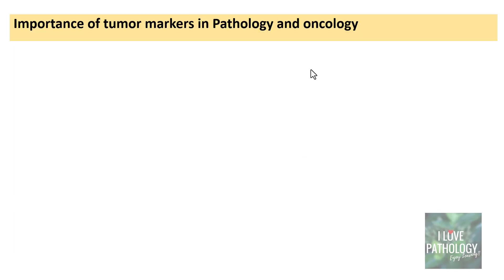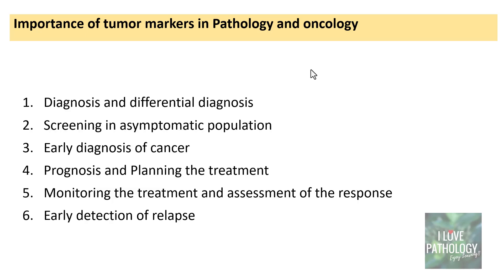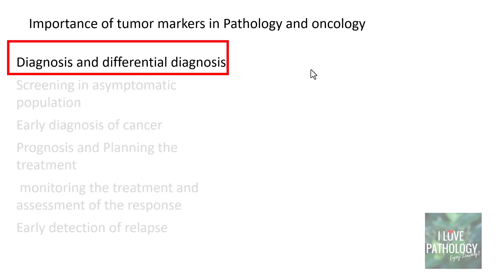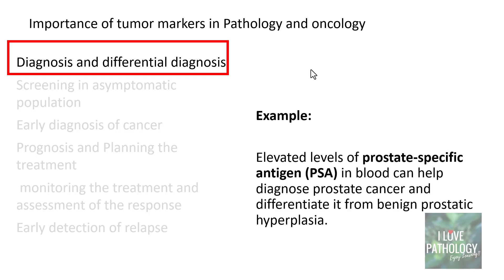Now, why do we need to know tumor markers? What is the importance of tumor markers in pathology and oncology? There are various uses. First is diagnosis and differential diagnosis. For example, elevated levels of prostate-specific antigen help in diagnosing prostate cancer, and significant elevations can differentiate it from benign prostatic hyperplasia, where there would be no significant elevation.